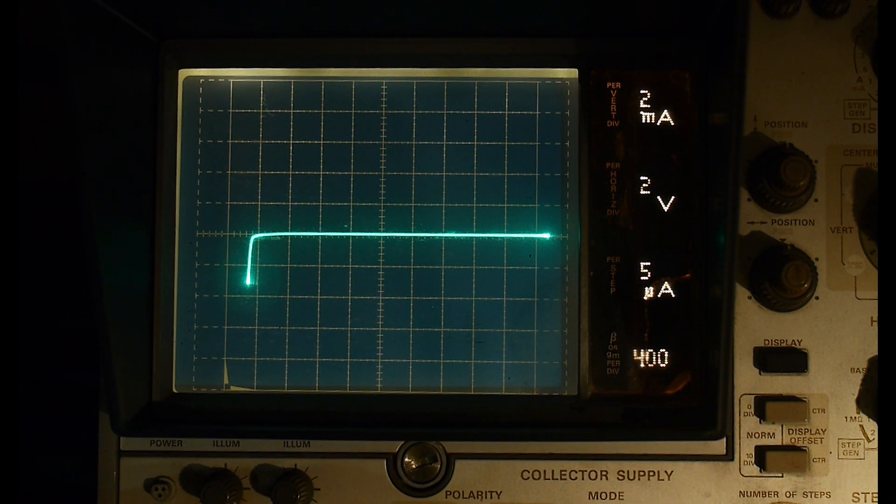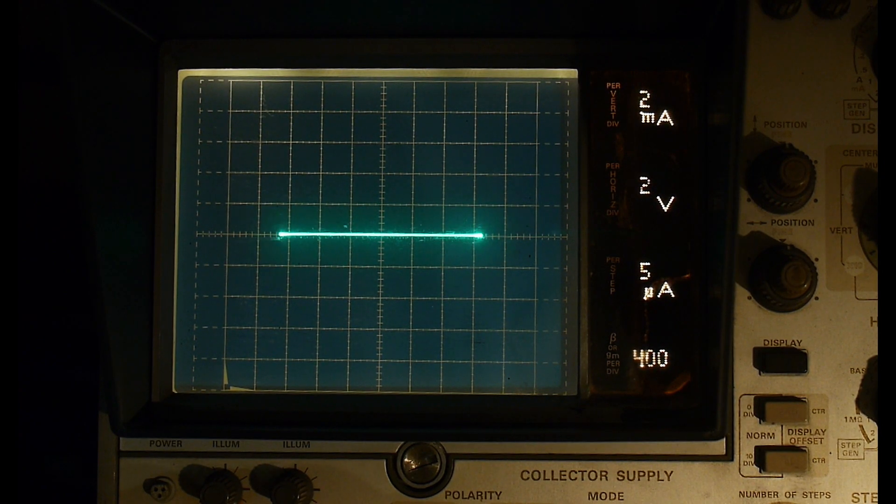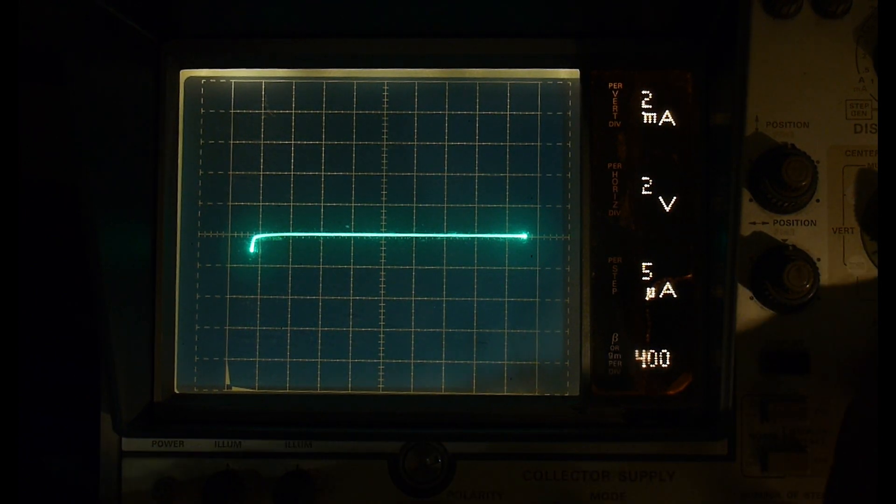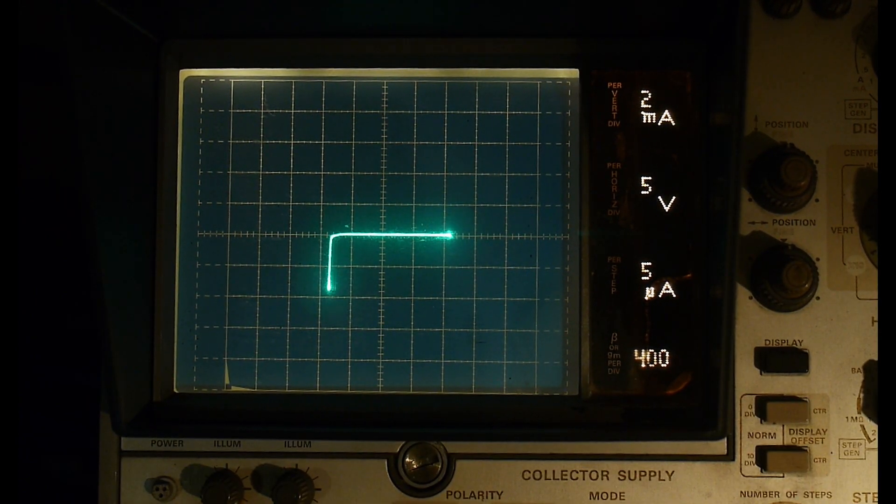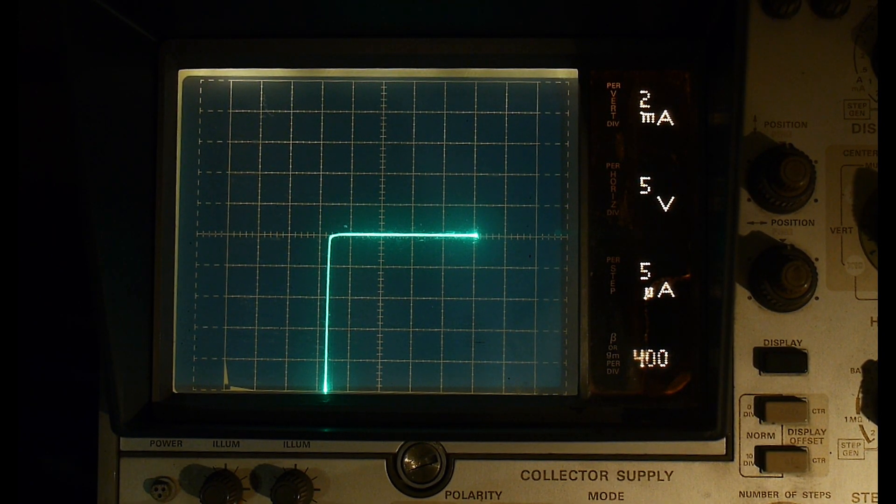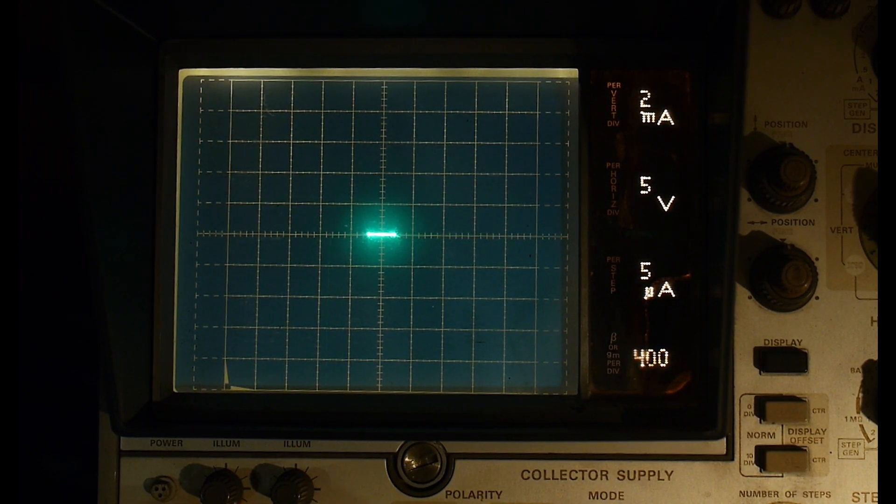But look at the forward direction. It never turns on. It never turns on. I don't get it. Let's go here with 5 volts per division. So 5, 10, 15, and it never turns on.